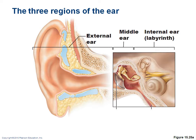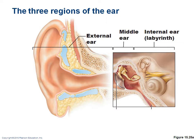Here's picture 15.25 from your book. You can see the external ear, the middle ear, and the inner ear. The external ear is made of elastic cartilage, which has a recoil — you can push your ear down and it snaps back. The ear lobe at the bottom is mostly made up of fat and epithelial skin.